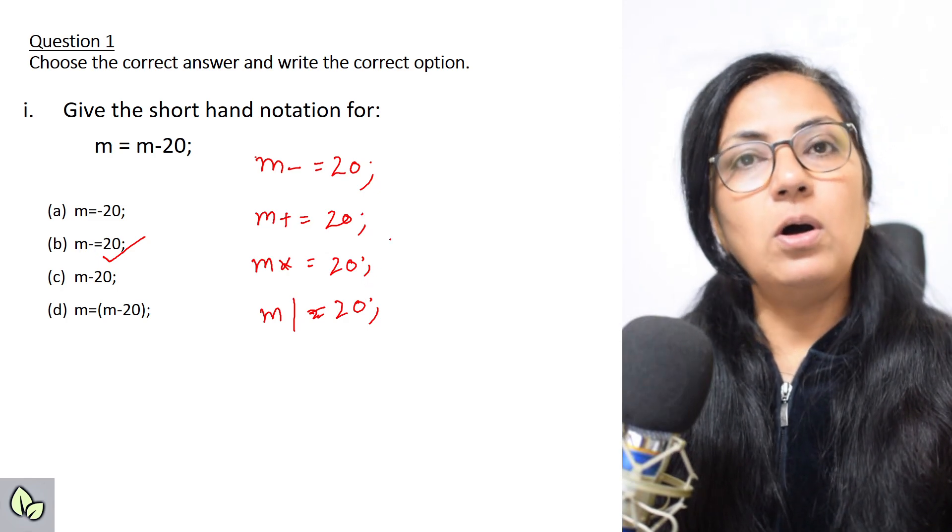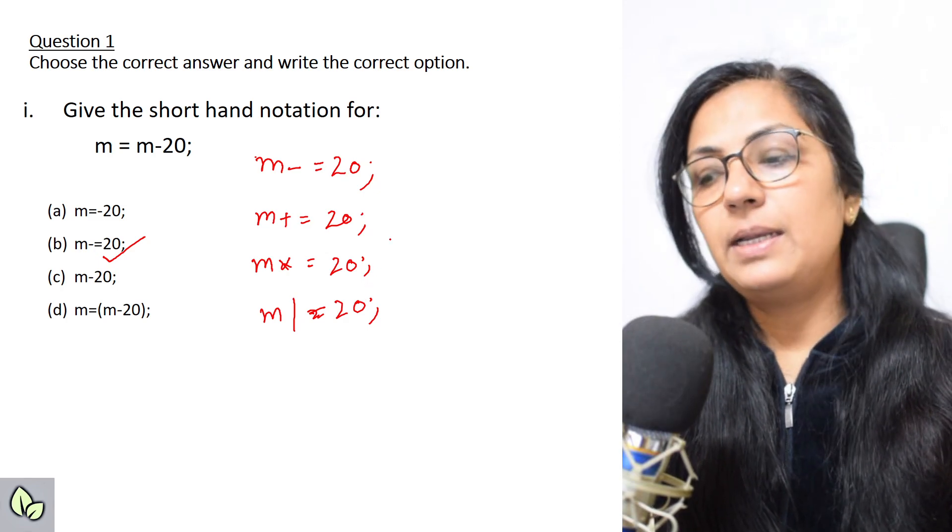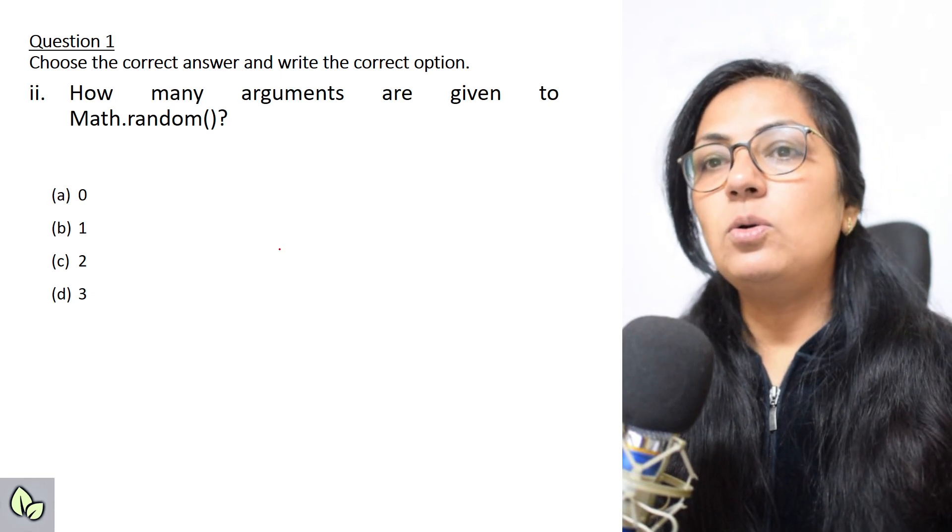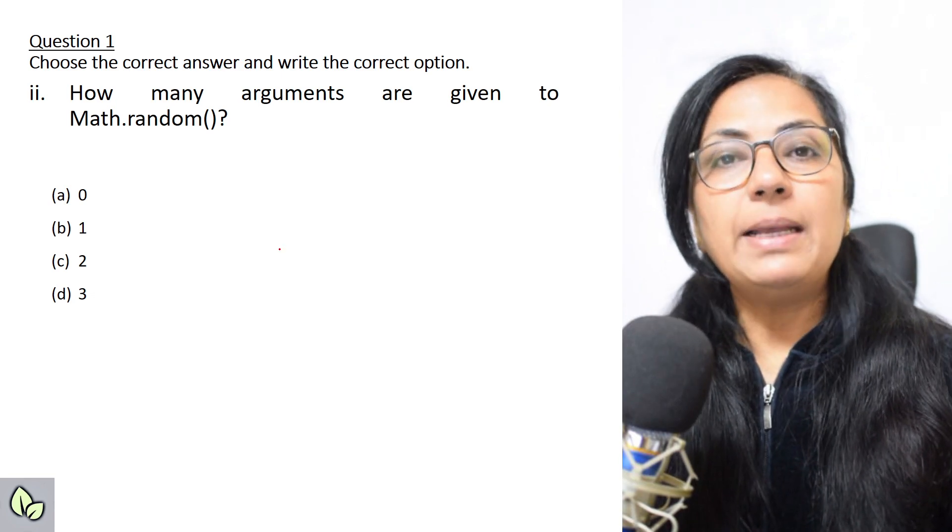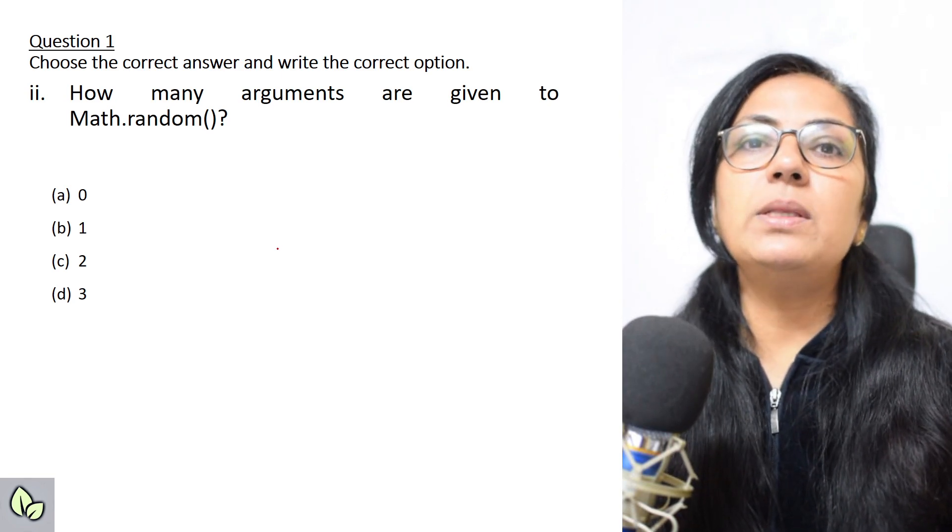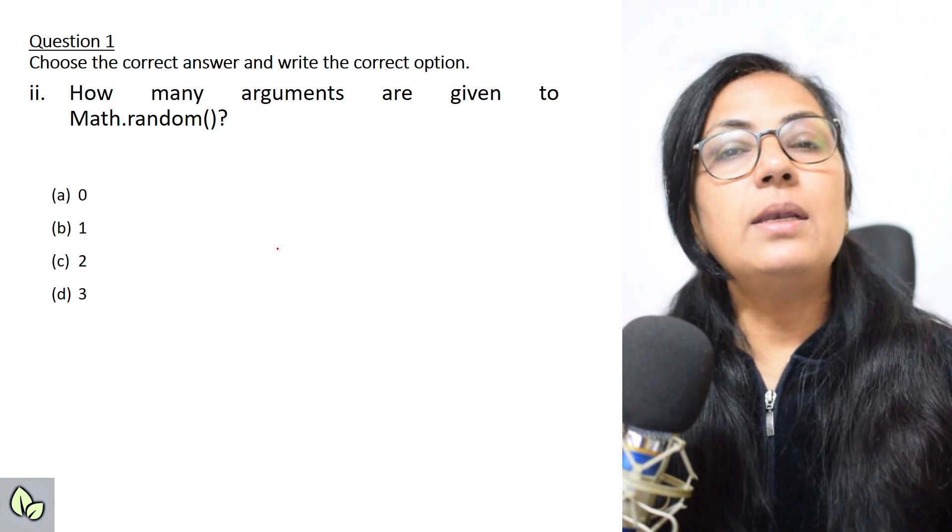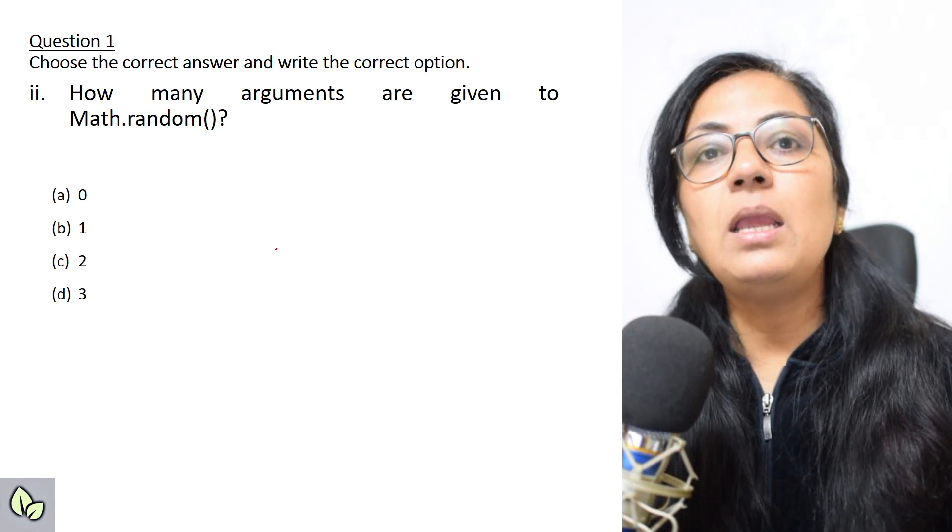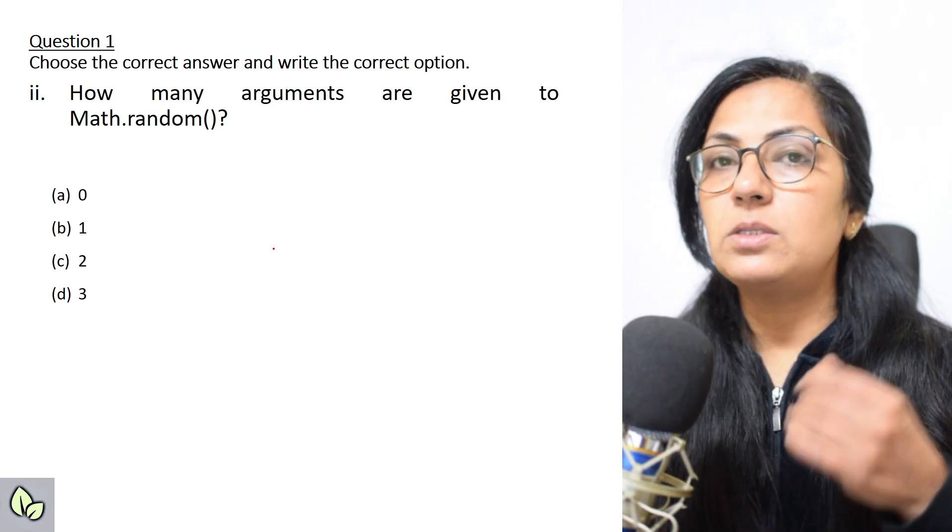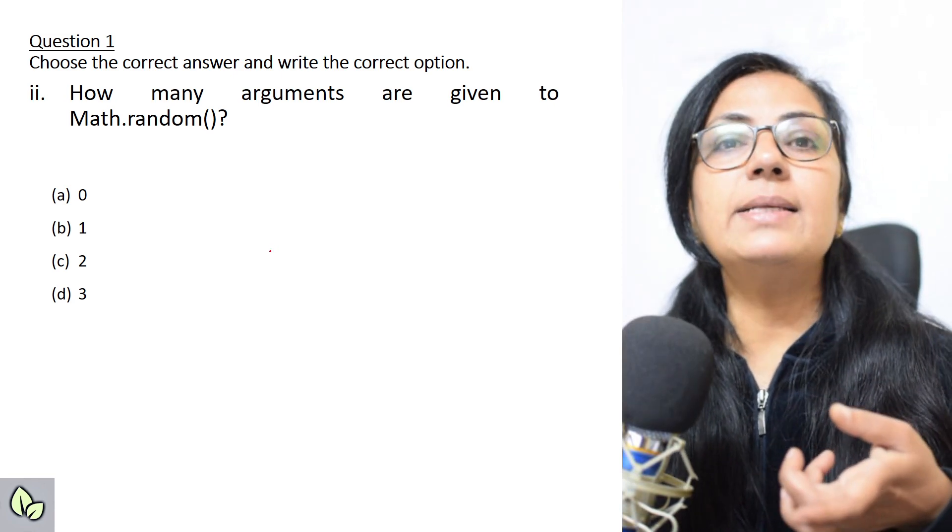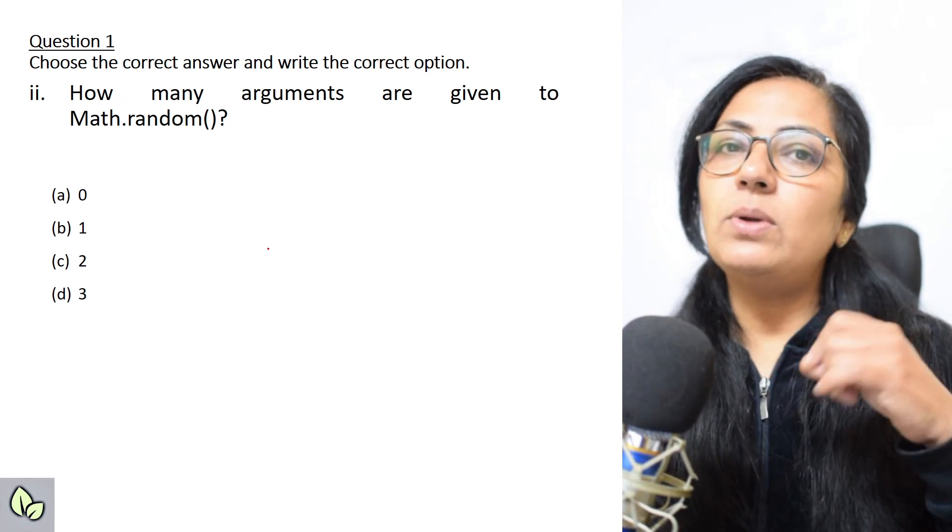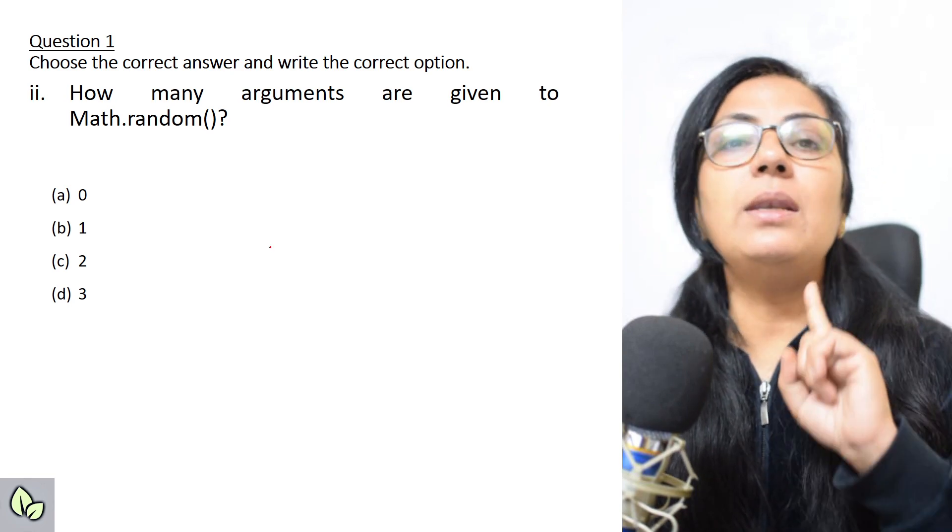The second question: how many arguments are given to Math.random? Math.random is a function which generates a random number between 0 and 1, and it never takes any argument. You cannot pass any argument to this function, although the formulas are there to generate numbers between ranges. But this function never takes any argument for execution, so the option is 0.